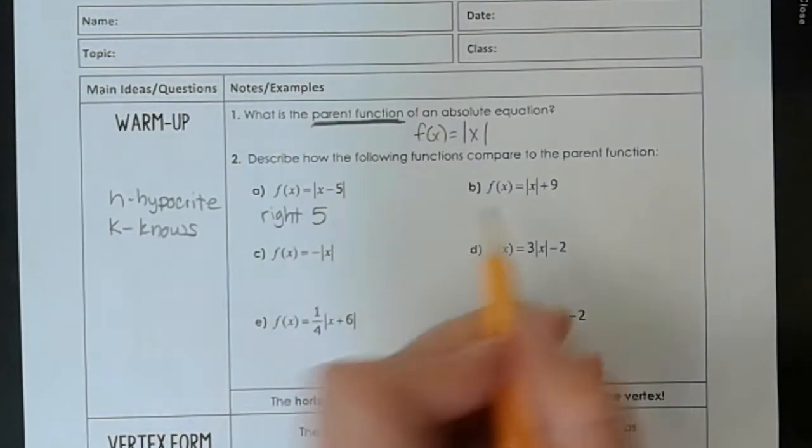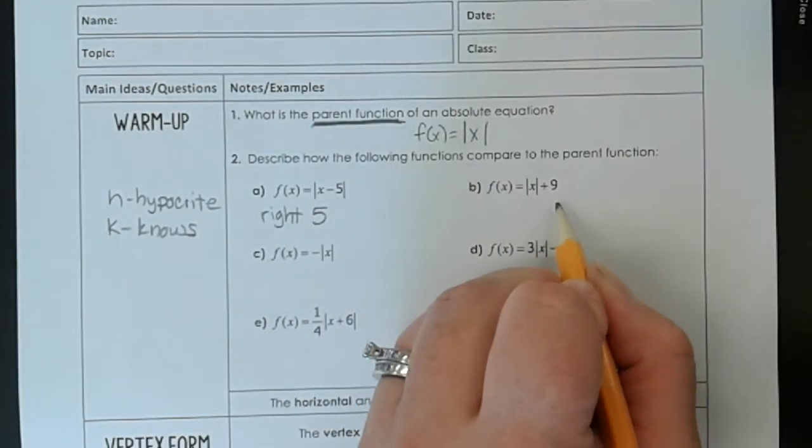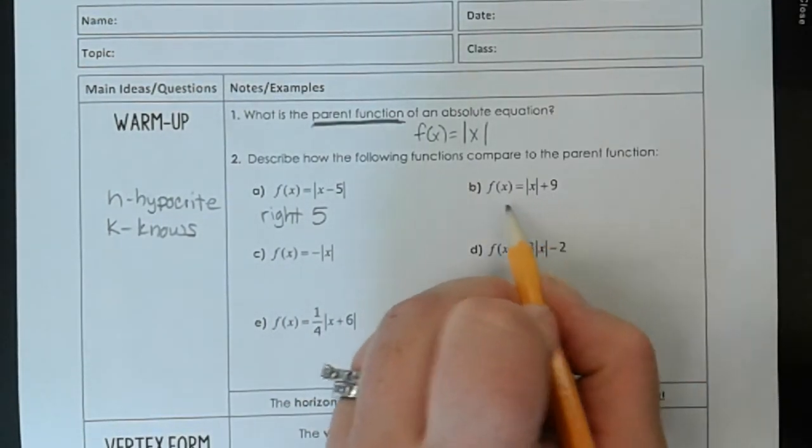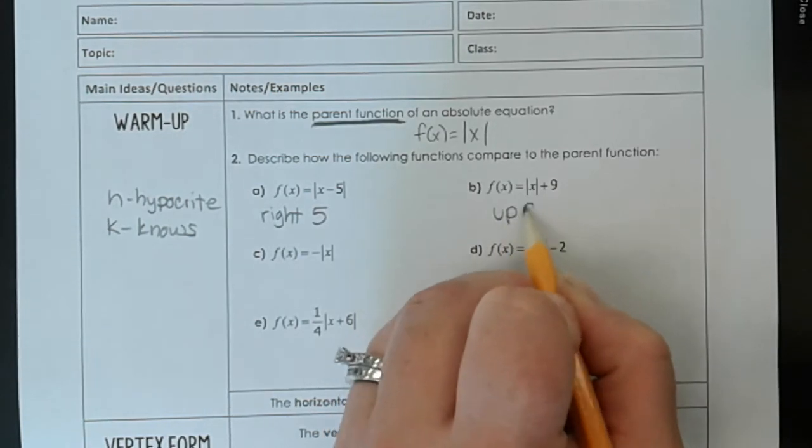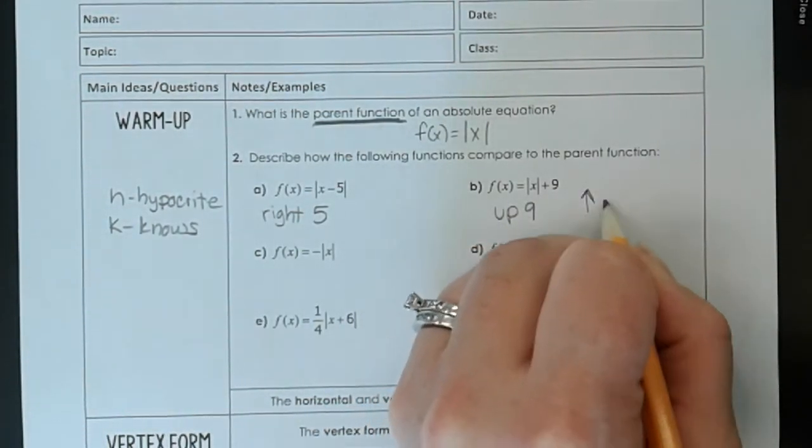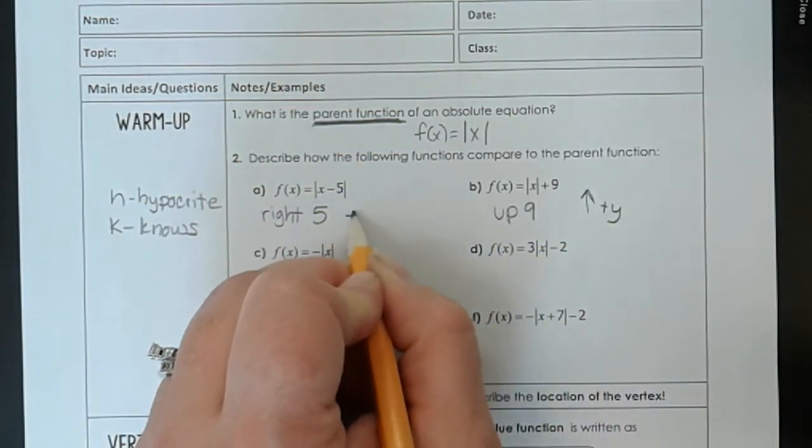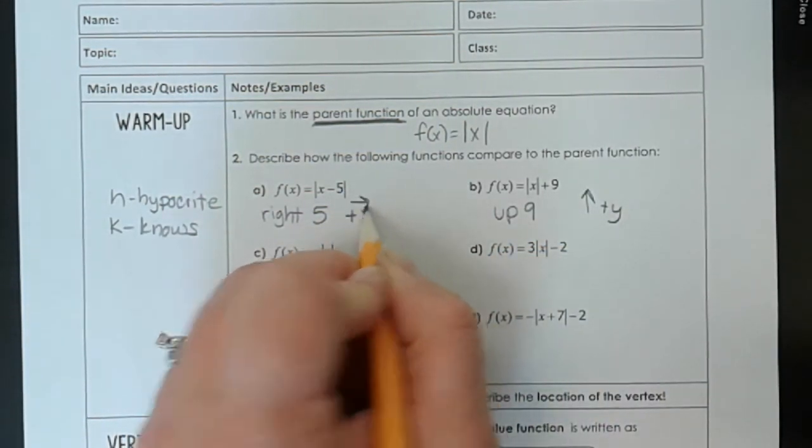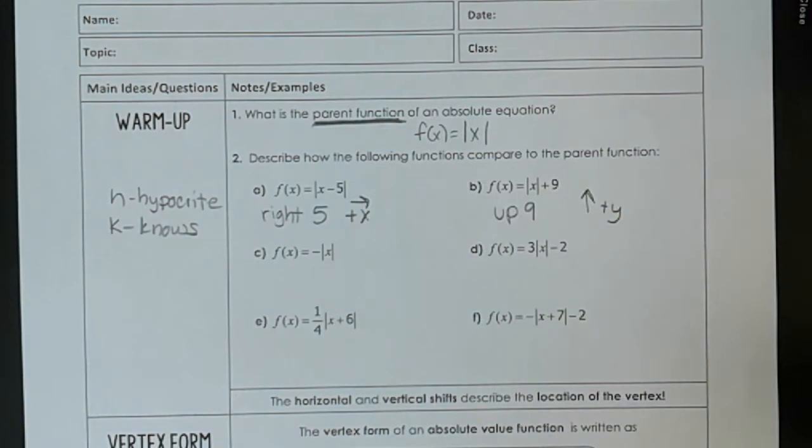Now k knows what's up. So he is here. This is a k right here. So this one shifts it up 9. We go in the positive direction. That's the positive for y. This one shifts it in the positive for x, which is this way, which is the opposite of what we see. So just remember h is a hypocrite. You always do the opposite of what you see, and k knows what's up. So you always do exactly what you see.